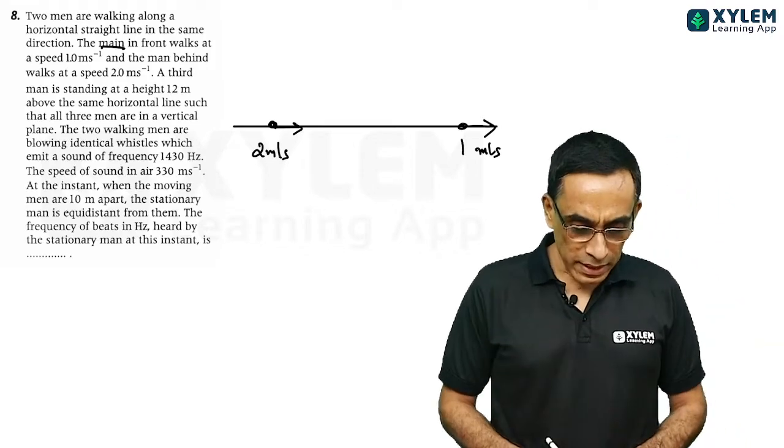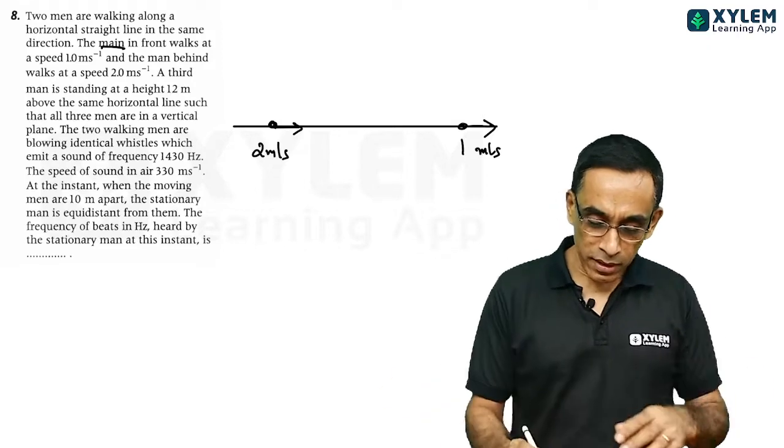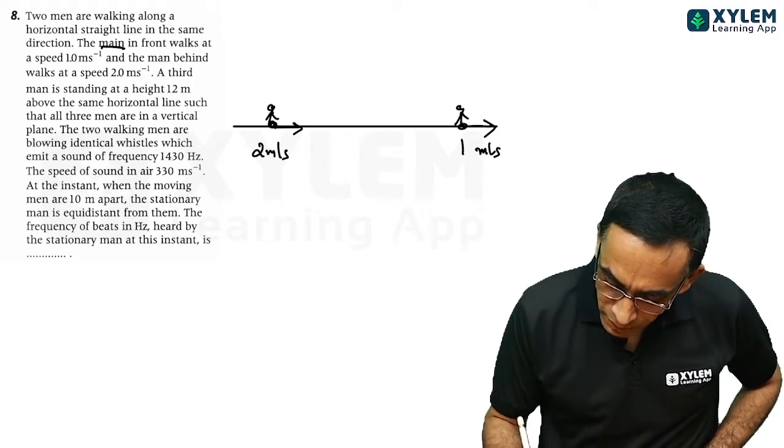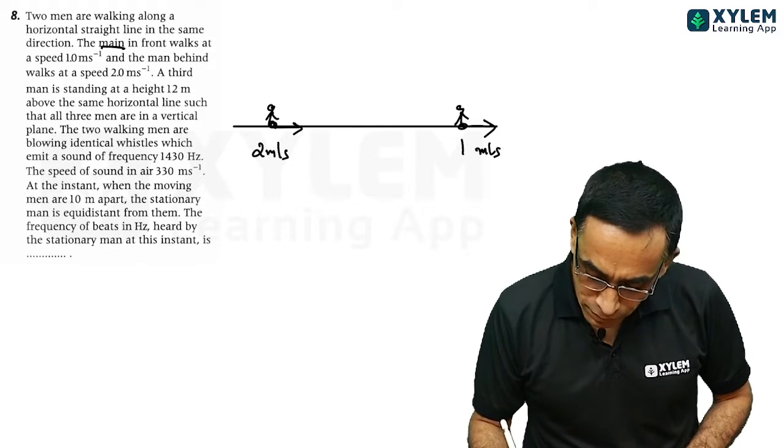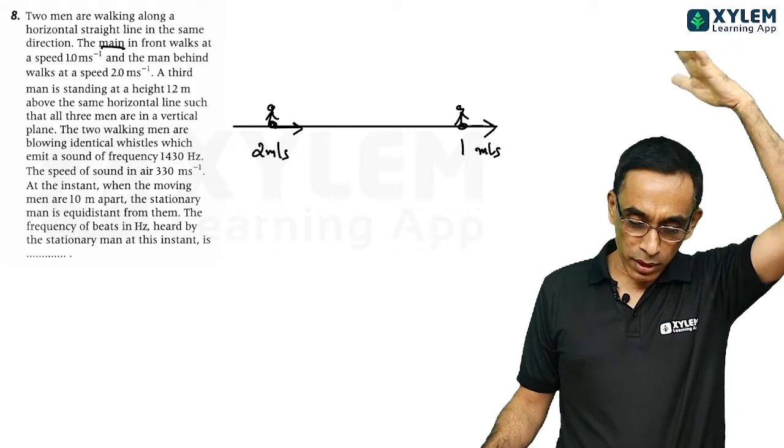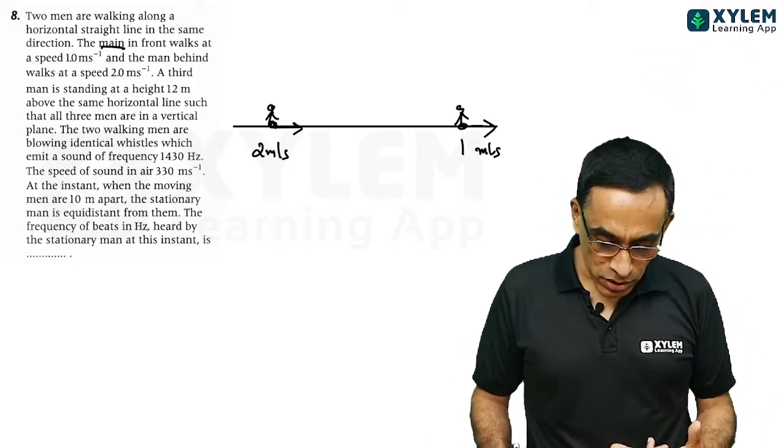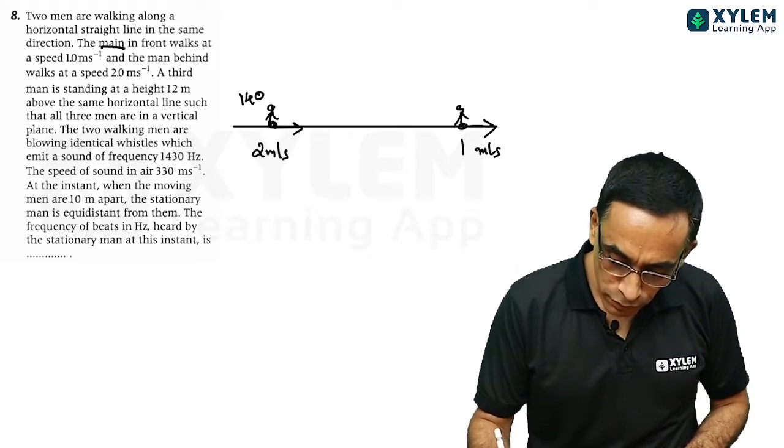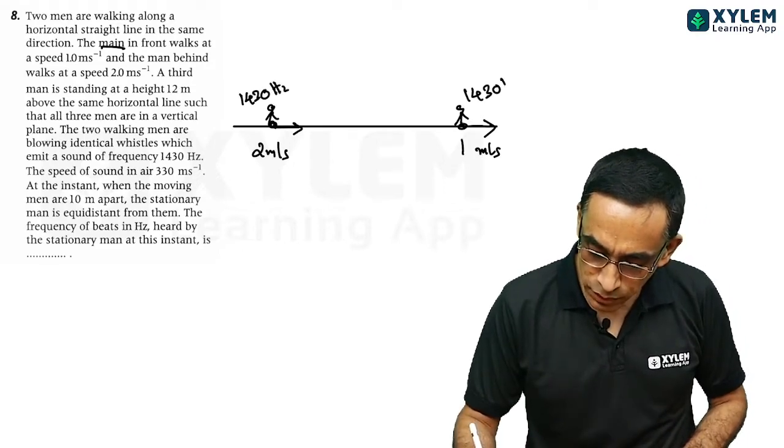A third man, standing at the height of 12 meter. Assume that it is ground. They are walking like this. Then, above them, 12 meter above. There is a horizontal line in the 2 walking men are blowing identical whistles, which emit frequency of 1430. He is producing a sound of 1430 hertz. This man also producing same frequency.